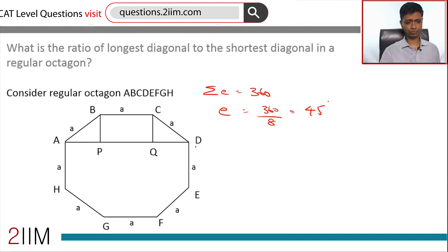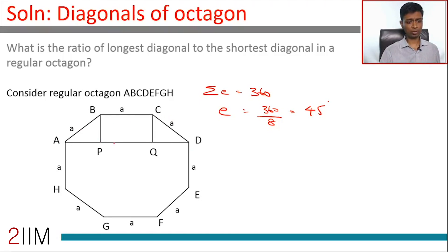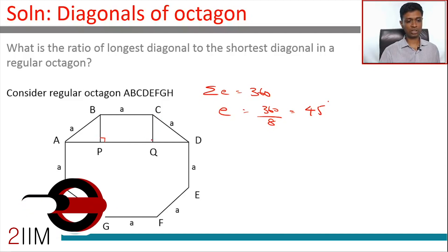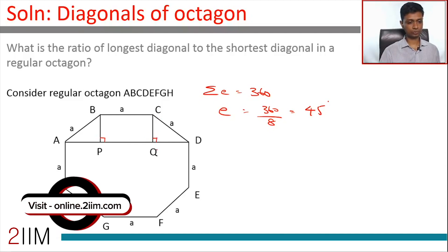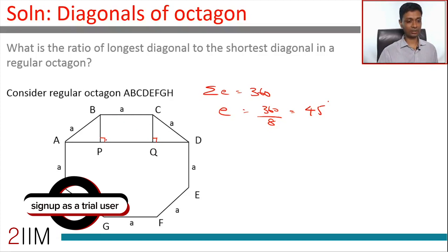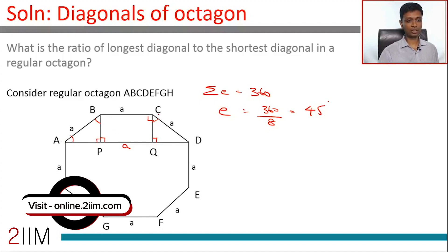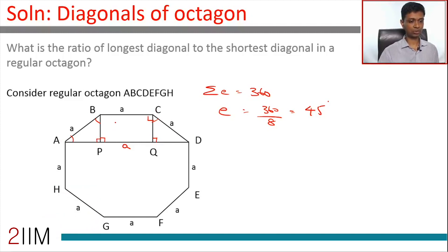Now join diagonal AD, and call the meeting points P and Q. From B, drop a perpendicular to AD — it meets at P. From C to AD, it meets at Q. The angles at P and Q are 90 degrees, making BCQP a rectangle. Triangle ABP has angles 90, 45, and 45, so it's an isosceles right triangle. Similarly for triangle CQD.